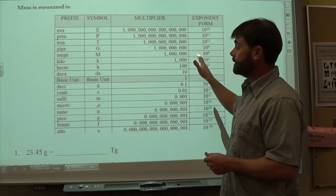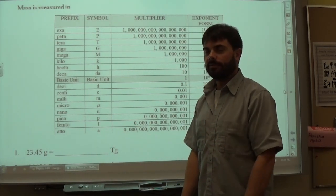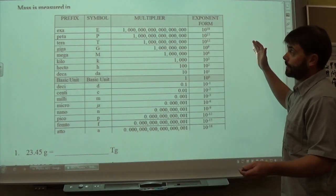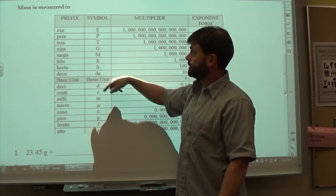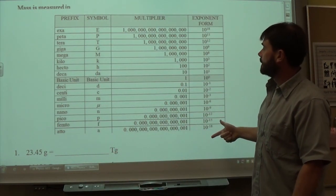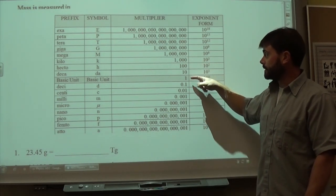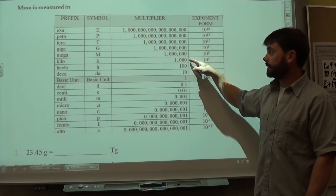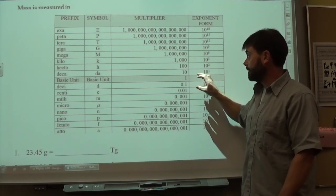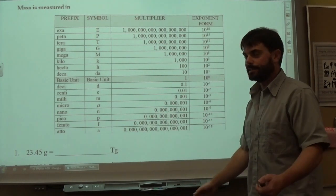Here's the prefix chart for the second method. It shows the symbols, the name of the prefix, and the multiplier. The previous staircase only went from milli to kilo — multiplying by 10, 100, or 1,000. This chart extends much further, all the way down to pico, femto, and atto, and all the way up to tera and exa.